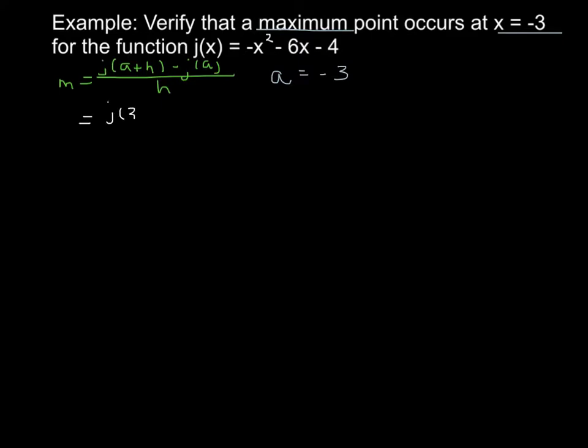I can plug in a equals negative 3 into this. So I want to solve j(-3+h) minus j(-3) all over h. So I have negative 3 plus h squared minus 6 times (-3+h) minus 4.